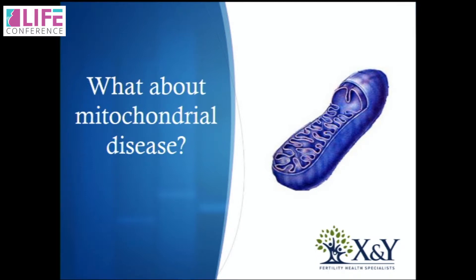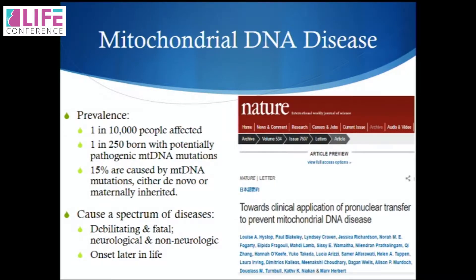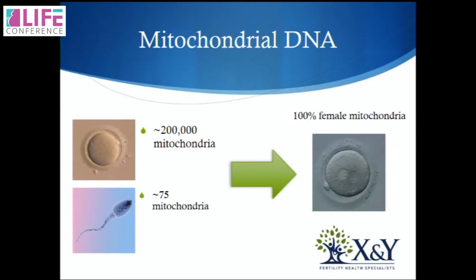What about mitochondrial disease? This is relatively new work, certainly in the UK. Mitochondrial disease prevalence: 1 in 10,000 people are affected; 1 in 250 are born with a potentially pathogenic mitochondrial DNA mutation. 15% of these are caused by mitochondrial DNA mutations either de novo or maternally inherited. They cause a range of diseases that can be debilitating, fatal, or come on at later onset. The paper to refer to is by Louise Dunlop from Newcastle, who publishes in Nature because of the groundbreaking work there on curing mitochondrial disease. To give more on inheritance: the egg brings about 200,000 mitochondria; the sperm brings about 75. When you are a fertilised egg, all of the sperm mitochondria are knocked out — you always inherit the female mitochondria.